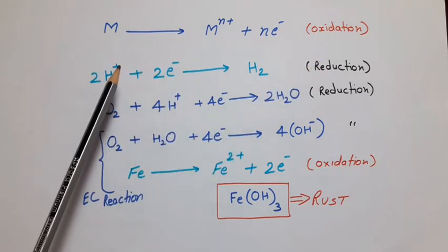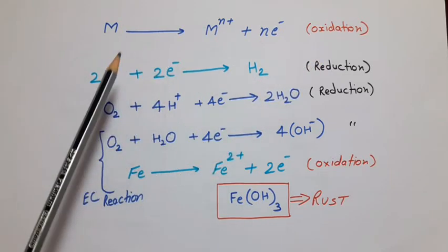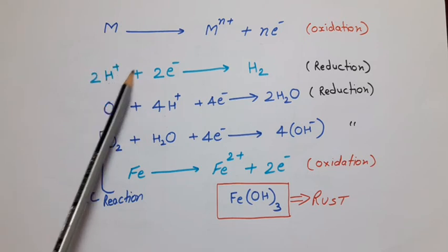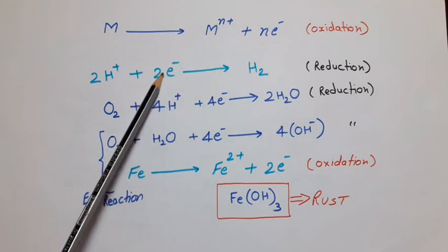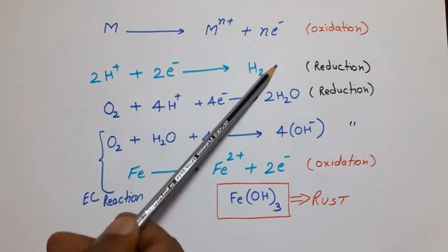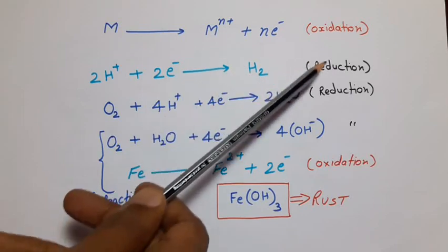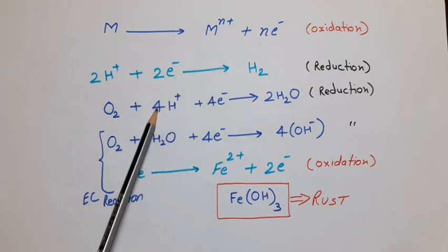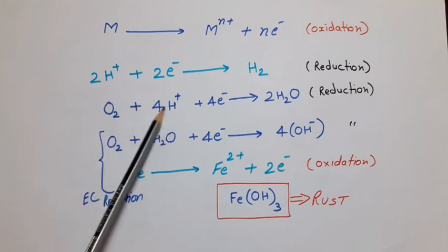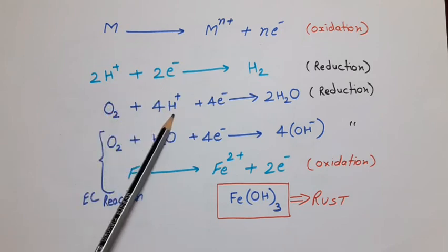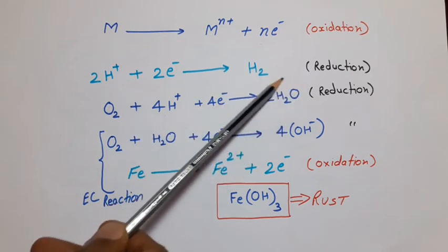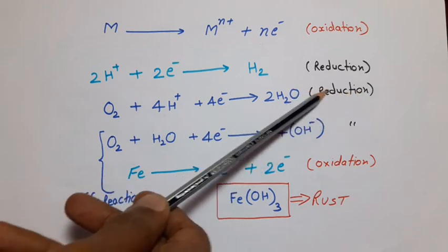Number 1: Suppose there is an acidic medium. In acidic medium, H+ ions will be present and those H+ ions will combine with free electrons which were generated by oxidation reaction, and the result will form hydrogen gas. This is one way of reduction. Number 2: Suppose there is an acidic medium in which oxygen is also present. In that case, oxygen gas plus 4 H+ ions and 4 electrons will combine to form 2 molecules of water. This is also an example of reduction.